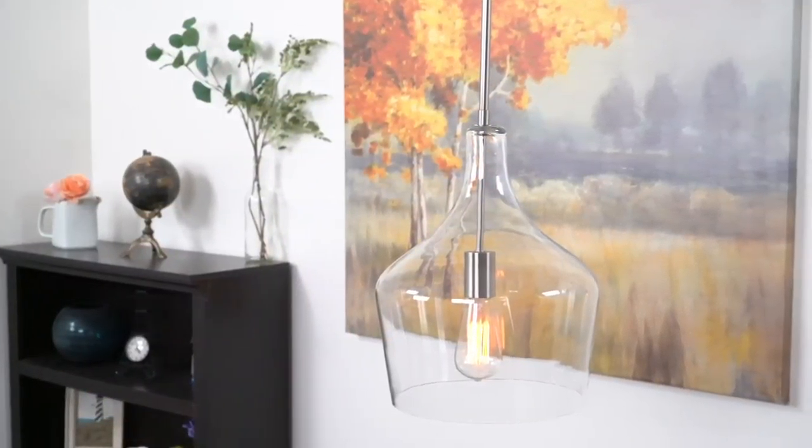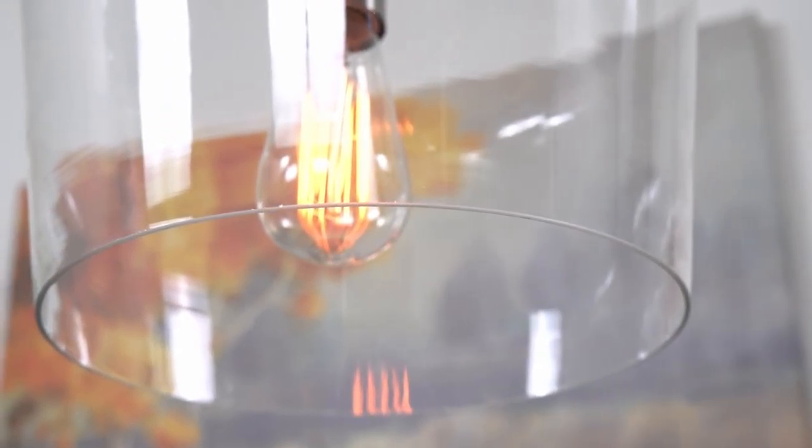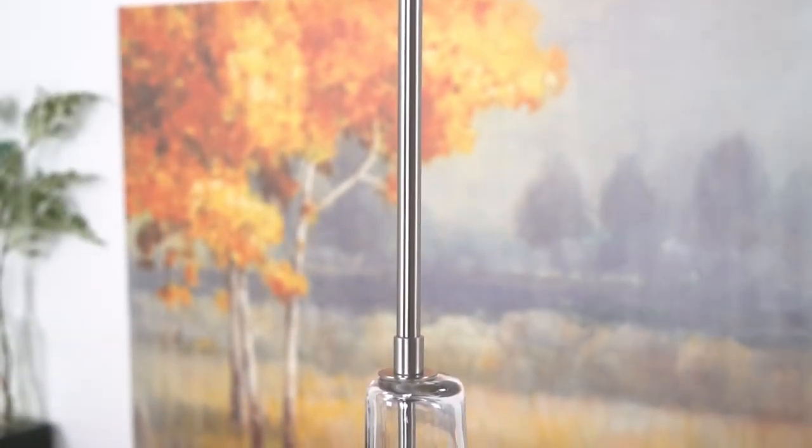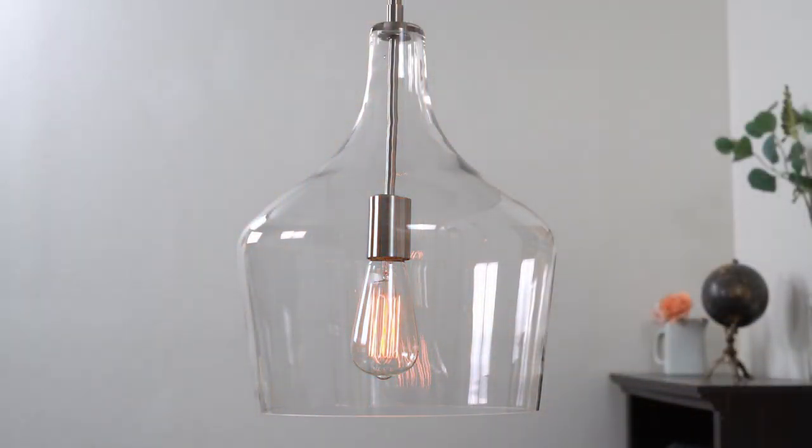Hey everyone, this is the Lucy 12-inch pendant light. This fixture features a gorgeous clear glass vase-style shade, has a sleek brushed nickel finish, and is dimmer compatible when paired with the correct bulb and dimmer combination.